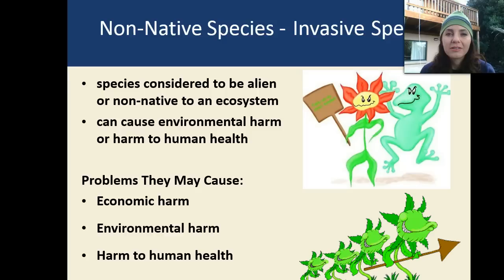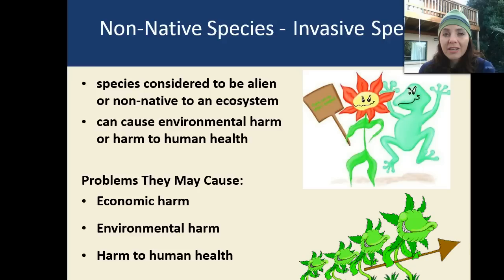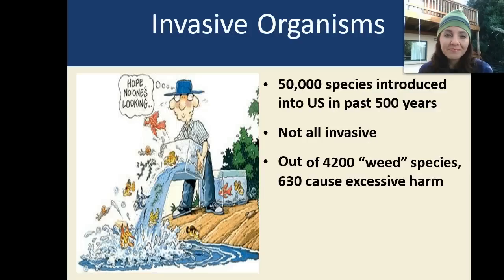Non-native species — sometimes we call these invasive species. These are species considered to be alien or non-native to an ecosystem; they can cause environmental harm or harm to human health. As an analogy, think about the Native Americans on the North American continent — they were native there. Whenever the pilgrims came over and colonized, they spread diseases to the Native Americans, which was very harmful. Problems invasive species can cause include economic harm — they might destroy crops or ranching operations — as well as environmental harm. There are over 50,000 species introduced into the United States in the past 500 years that were not native. Not all of them are invasive — meaning not all are bad; they're just non-native.